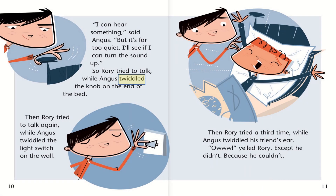"I can hear something," said Angus, "but it's far too quiet. I'll see if I can turn the sound up." So Rory tried to talk while Angus twiddled the knob at the end of the bed. Then Rory tried again while Angus twiddled the light switch on the wall. Then Rory tried a third time while Angus twiddled his friend's ear. "Ow!" yelled Rory — except he didn't, because he couldn't.